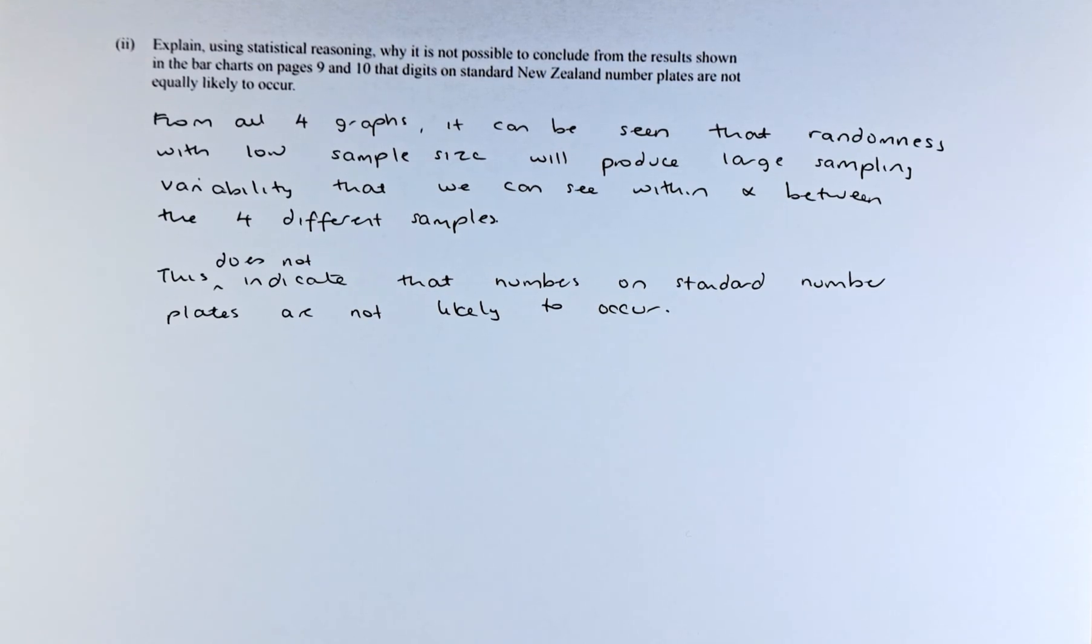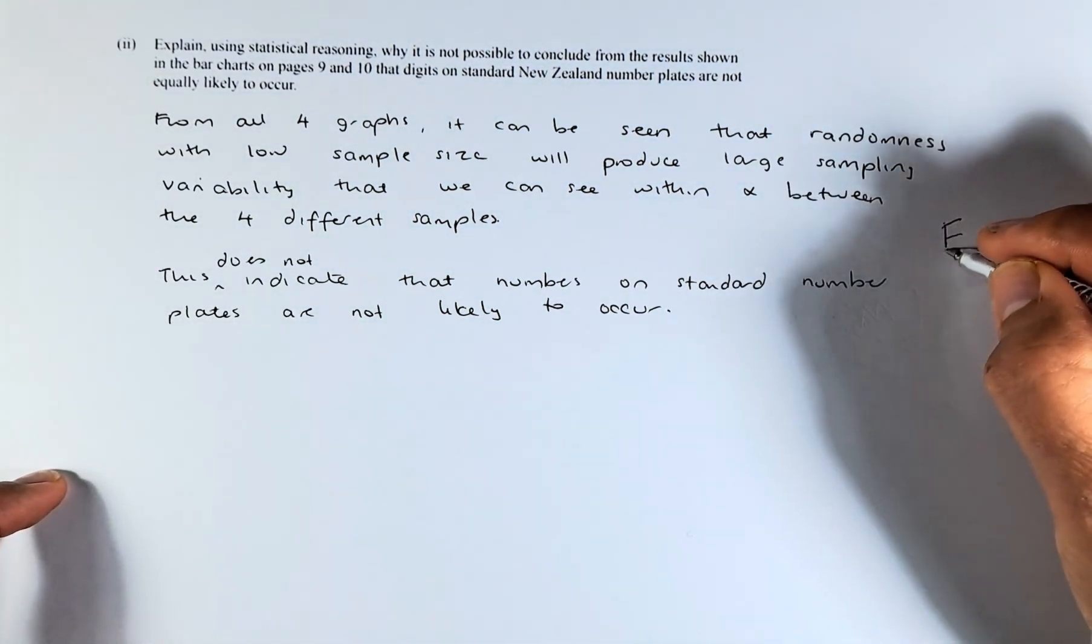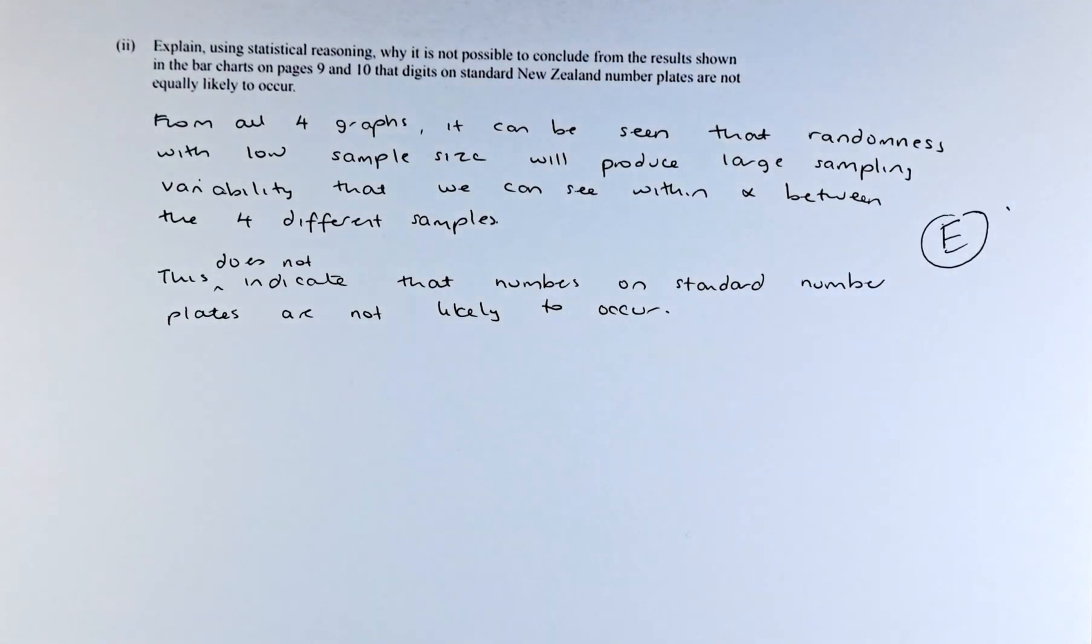That's the reason why, because due to the large sampling variability among the small sample size. So if you can answer that, there will be an excellence in this question and you get an E for this paper.